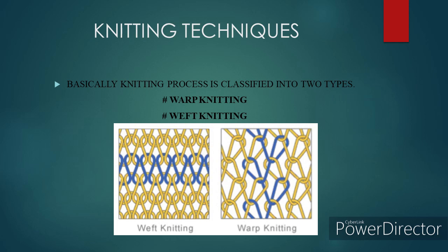A weft knitted fabric is manufactured where the stitches or loops run from left to right horizontally across the fabric. It is usually knitted with one piece of yarn and can be made either by hand or by using a knitting machine. The main difference between warp knitting and weft knitting is the way of intermeshing of loops. Weft knitted fabric is formed by the intermeshing of loops in the horizontal direction.